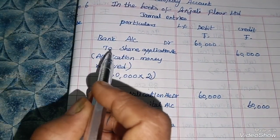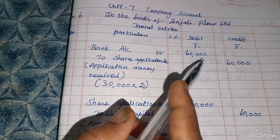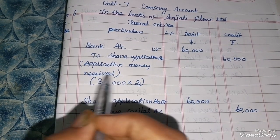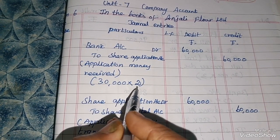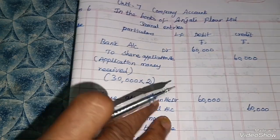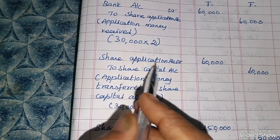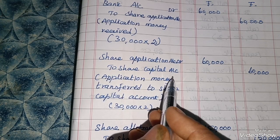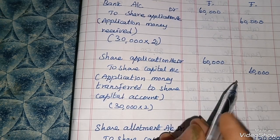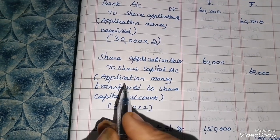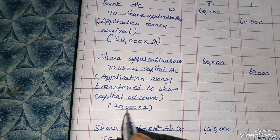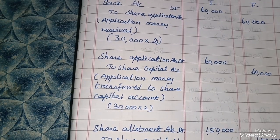Bank Account Dr. to Share Application Account — 60,000 / 60,000. Application money received: 30,000 × 2 = 60,000. Share Application Account Dr. to Share Capital Account — 60,000 / 60,000. Application money transferred to share capital account: 30,000 × 2 = 60,000.